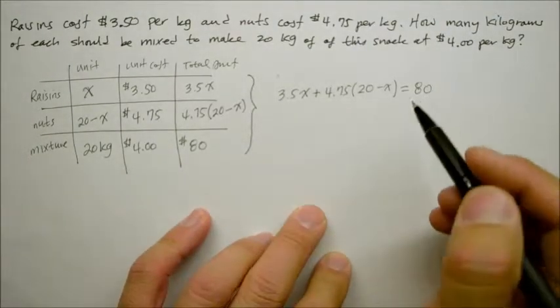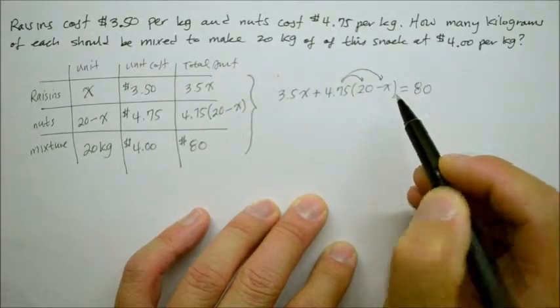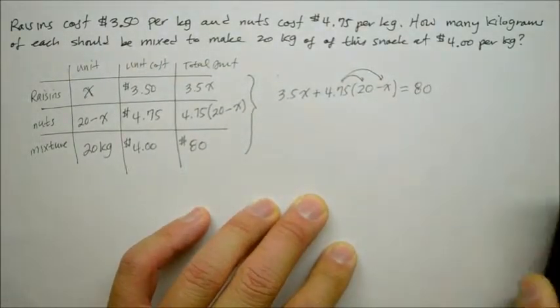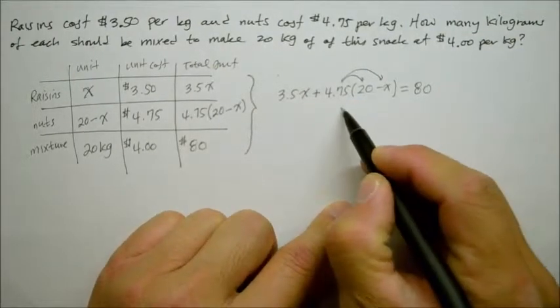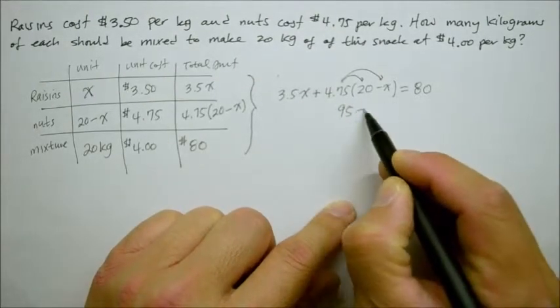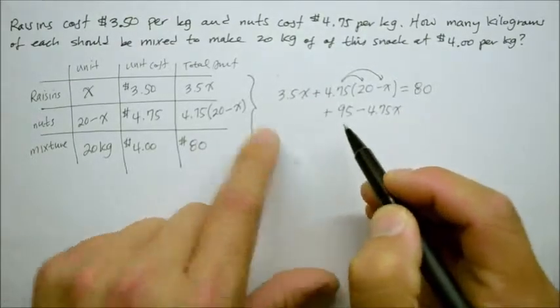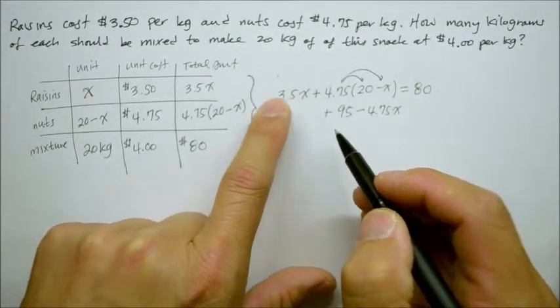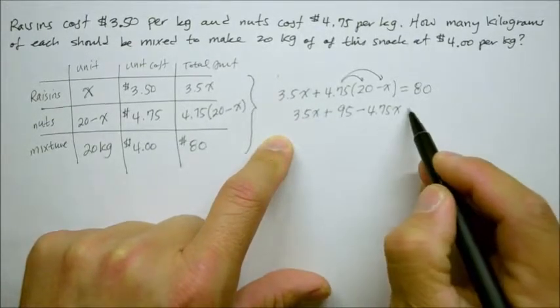So we're going to start evaluating by doing the distributive property. So I use my calculator to determine what is 4.75 times 20? That gives me 95. And 4.75 times negative X is just negative 4.75X. Plus, don't forget the raisins, it's 3.5X is equal to 80.